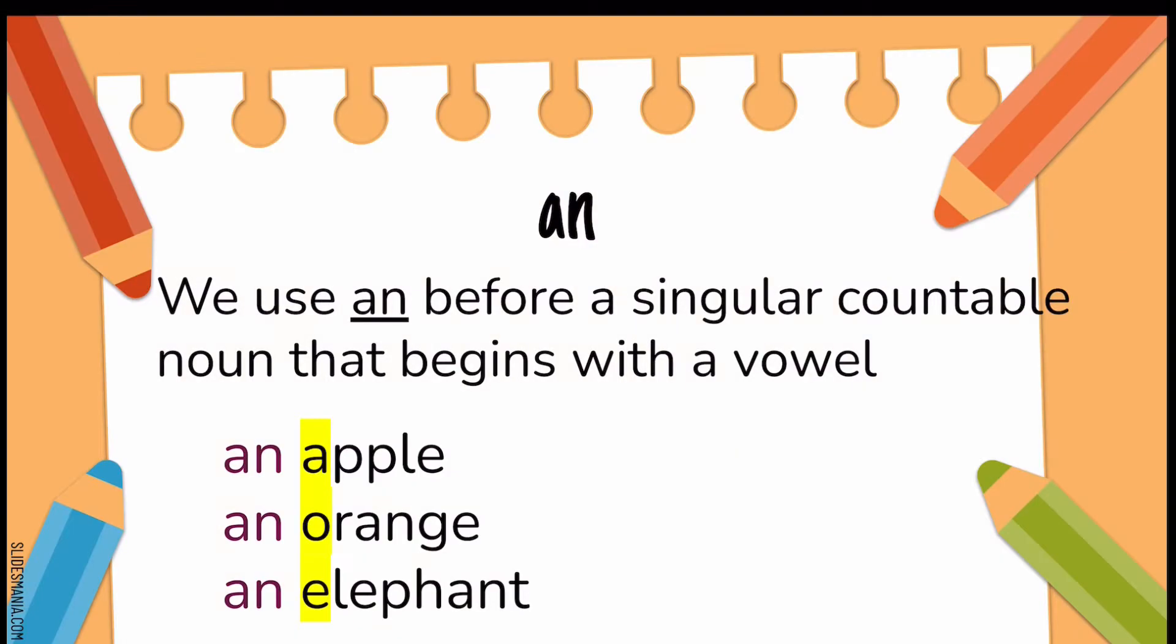Now, what about N? We use N before a countable noun that begins with a vowel, like an apple. So, the word apple begins with the vowel A. So, we don't say a apple. For example, we say an apple, an orange, an elephant.